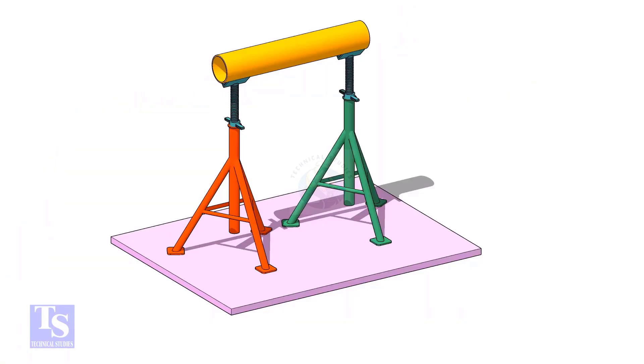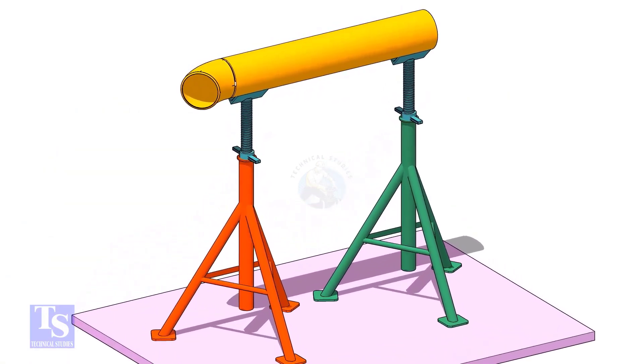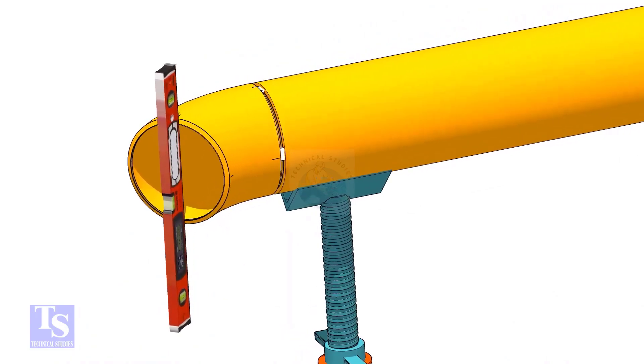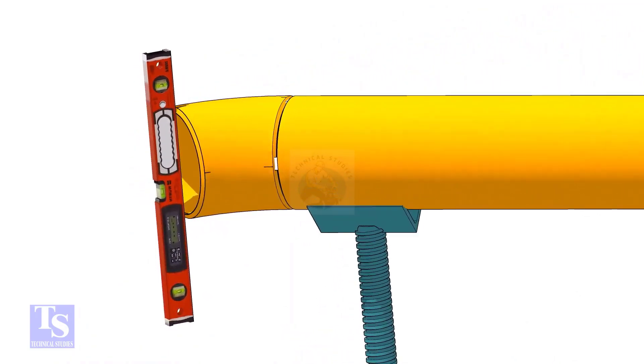Tack weld one elbow on a piece of the same size pipe. Level the elbow face through the center marks.